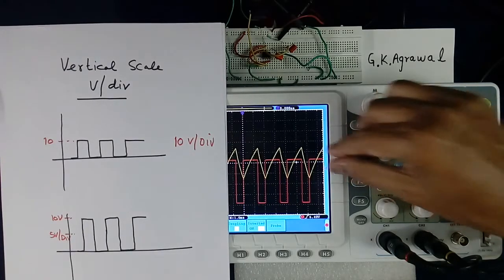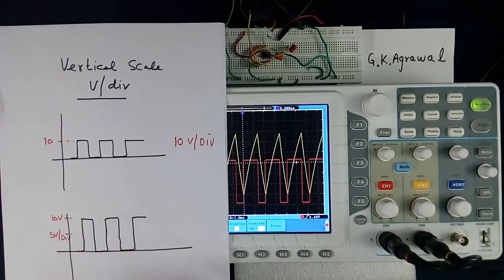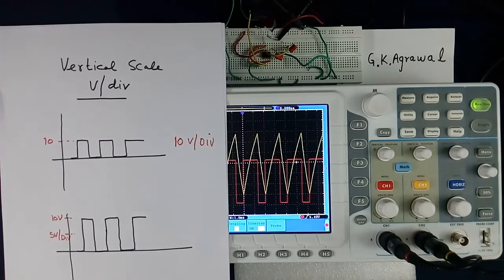This is more volt per division, this is less volt per division. Less volt per division means it will look bigger, the wave shape looks bigger.